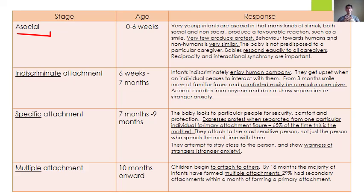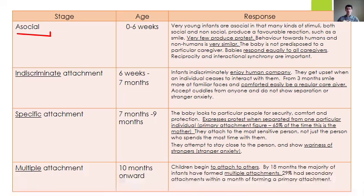The next stage is indiscriminate attachment, from six weeks up to seven months. Children start to enjoy human company more — choosing humans over non-humans — and they get upset when you don't play with them. From three months onwards they start to smile at familiar faces and are more easily comforted by one main caregiver, usually the mother. However, they still accept cuddles from most people and haven't yet started to show separation anxiety or stranger anxiety.